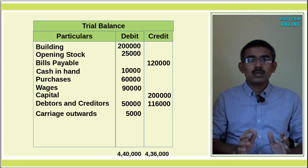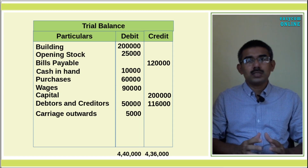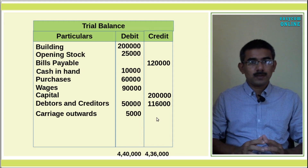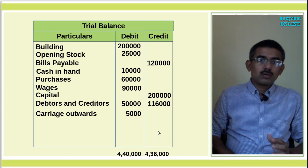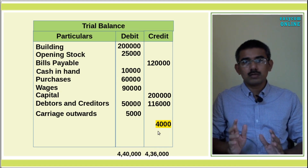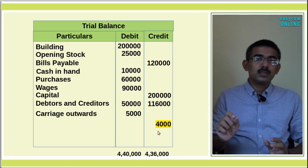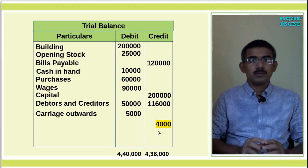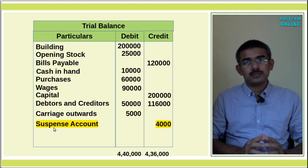We will complete the process using a suspense account. The difference amount of Rs.4,000 is placed on the credit side, and it is called the Suspense Account.